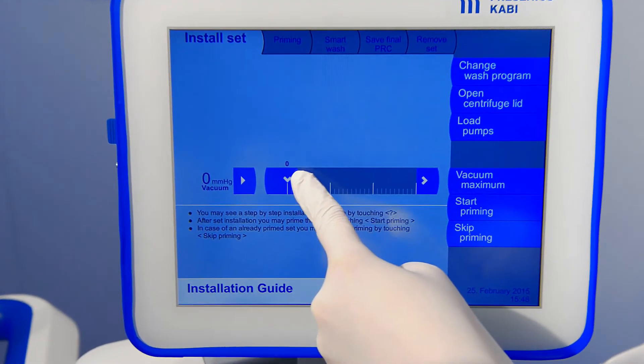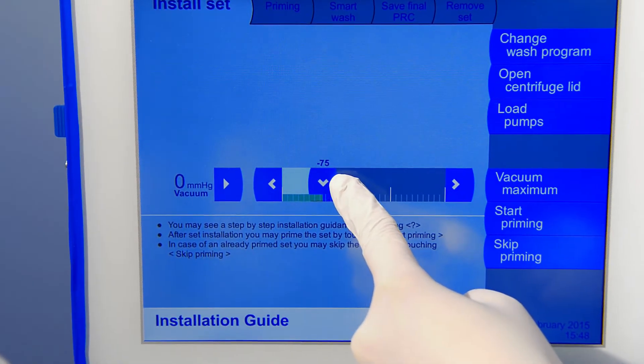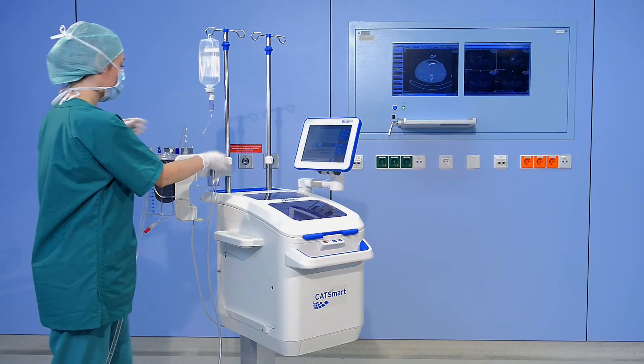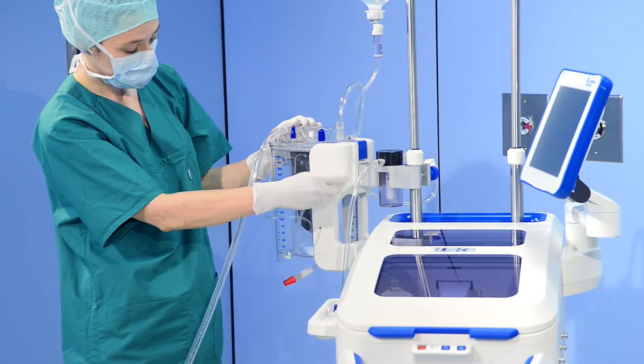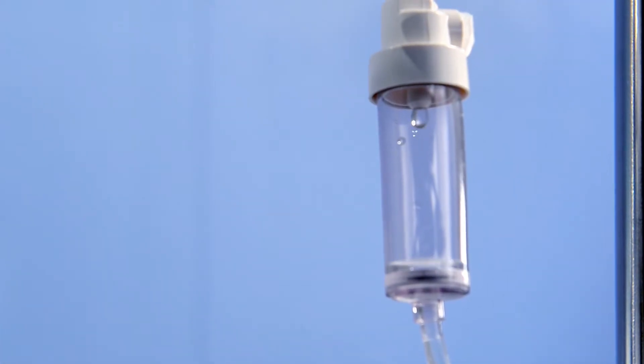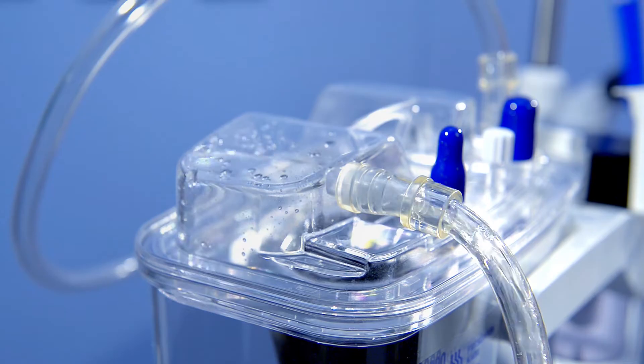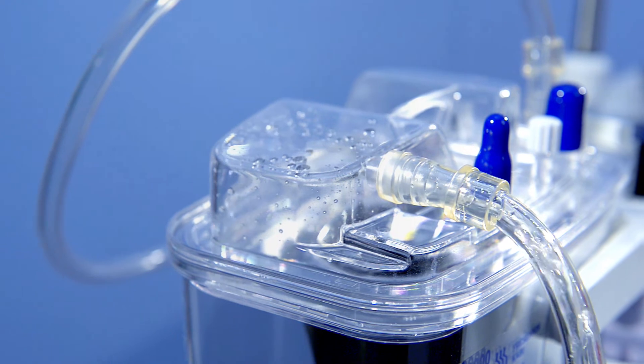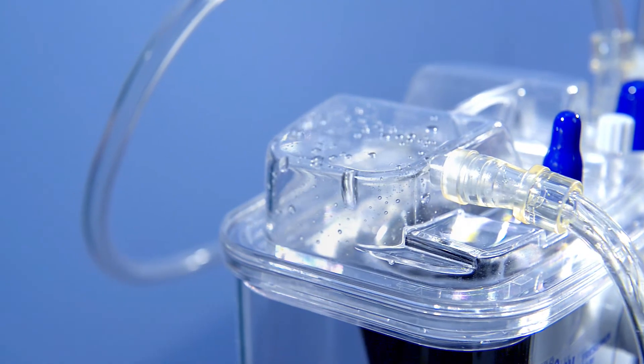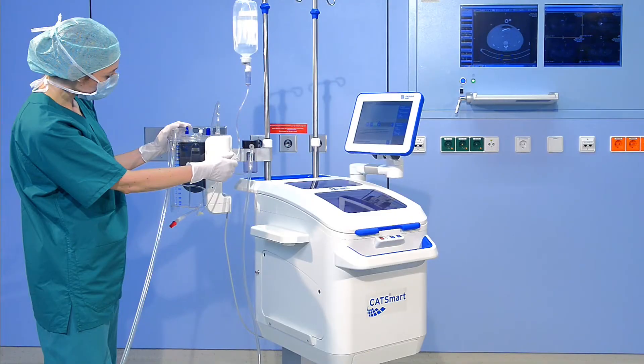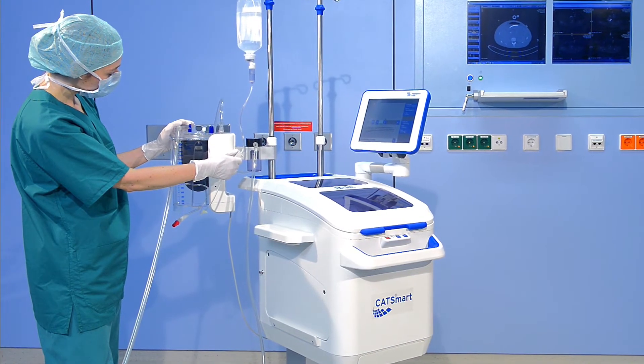Adjust vacuum via the touch screen to minus 100 mm mercury. When suction has begun, open the roller clamp below the drip chamber and prime the suction line and the filter with 250 milliliters of anticoagulant. We recommend heparin. Afterward, adjust the flow to 60 drops per minute.